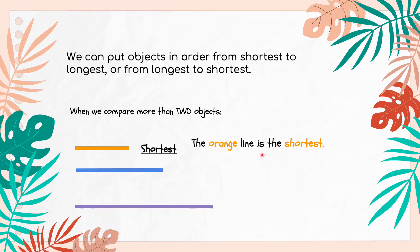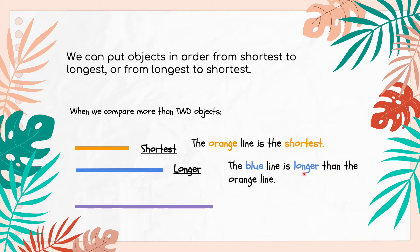Now how are we going to describe the blue line? We say it's longer — but longer than which line? We have to add that as well, so we say the blue line is longer than the orange line. We use the term longer here because we are comparing the length of the blue line with the length of the orange line only, which makes it two lines. Whenever we are comparing two objects, we can use the terms shorter or longer.